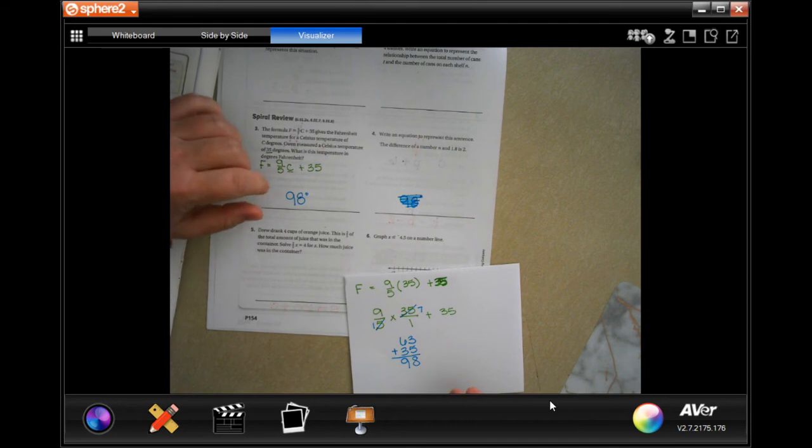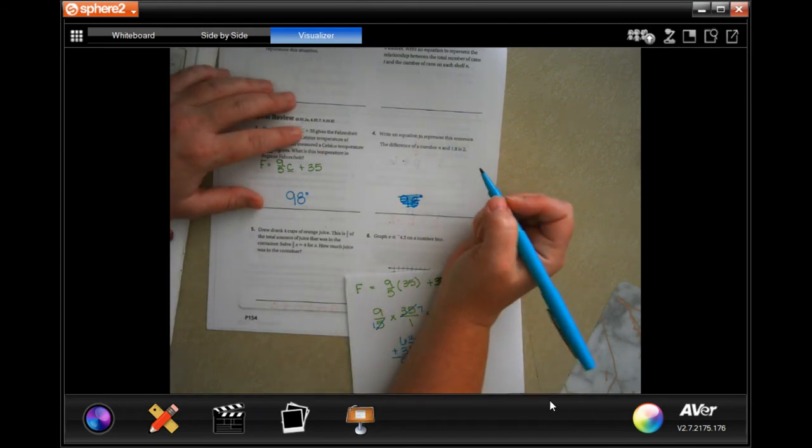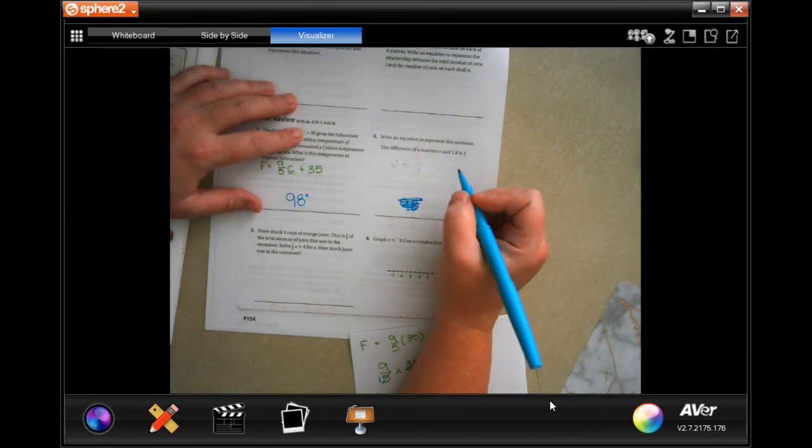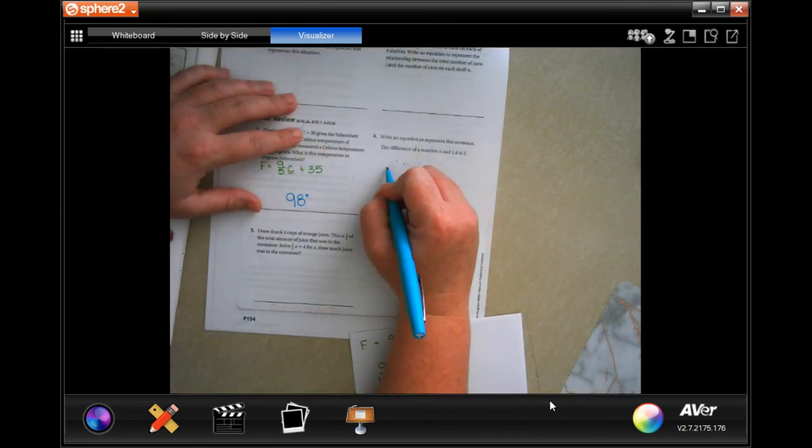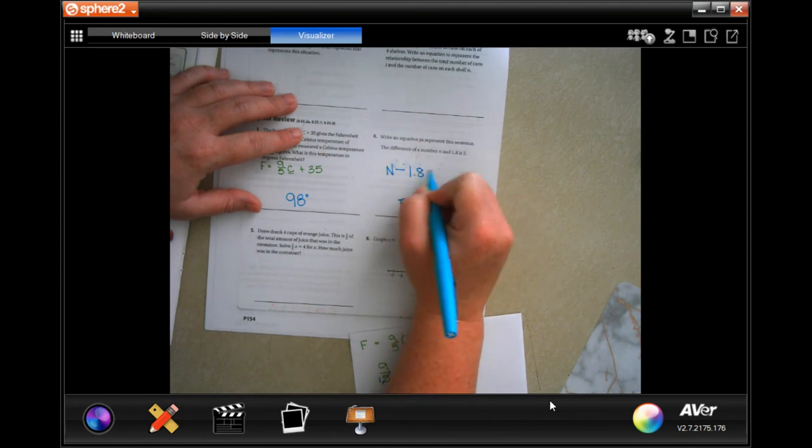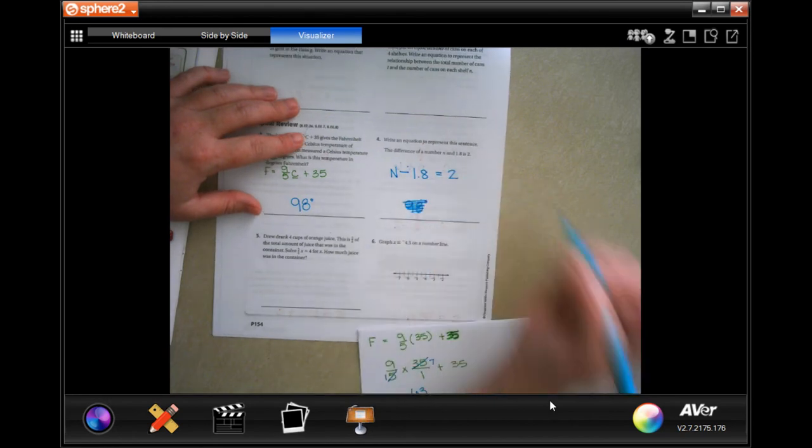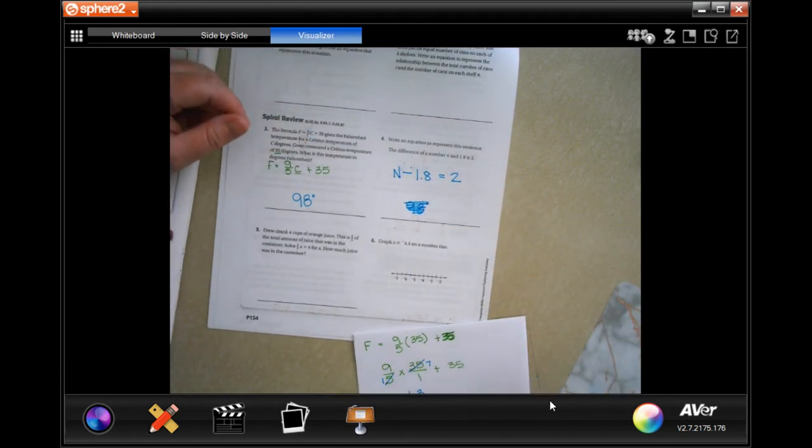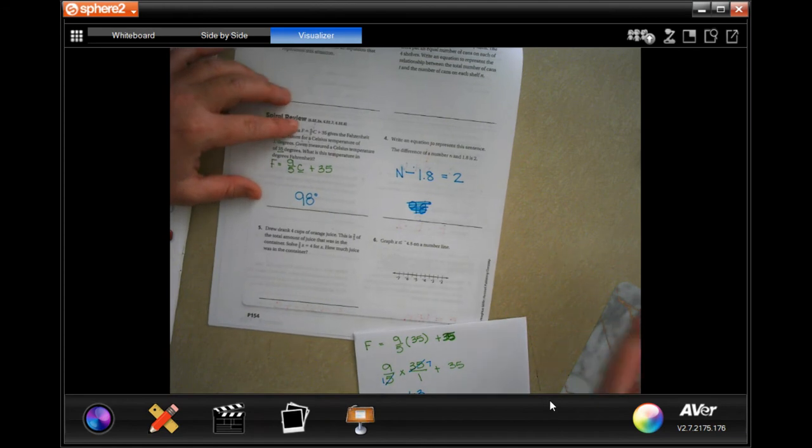Write an equation to represent the sentence. The difference of a number and 1.8 is 2. Well, so a number and the difference means subtraction, 1.8 is 2. Done.